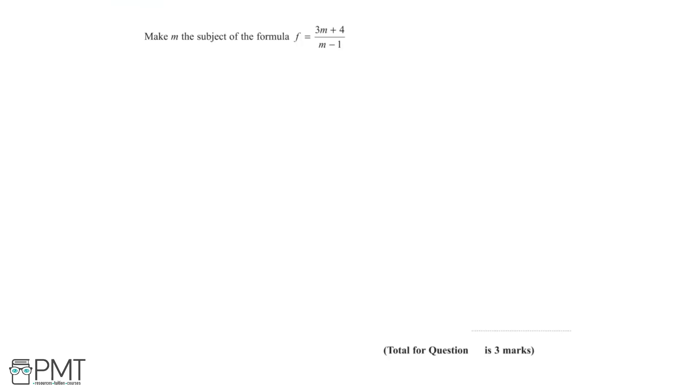In this question, we need to make m the subject of the formula f equals 3m plus 4 over m minus 1.